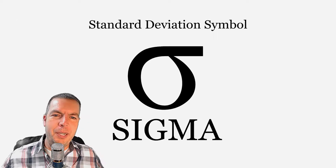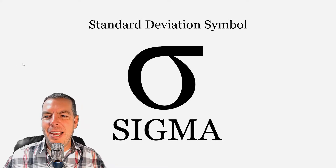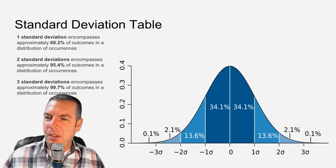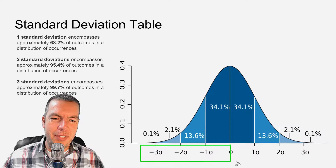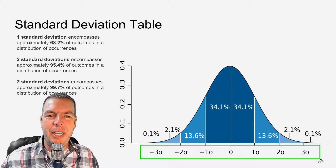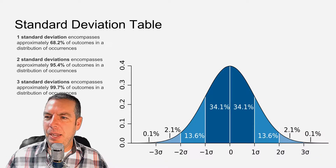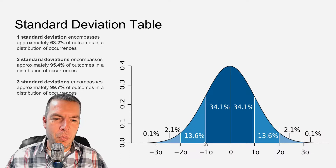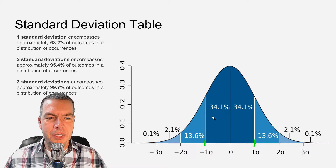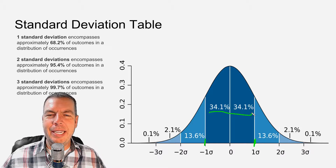So what is this symbol right here? This is the standard deviation symbol. I threw this slide in here so you'd feel smart looking at the next graph, because right along the bottom you can see our standard deviations. We have one, two, and three standard deviations represented on this standard deviation table. A one standard deviation — measured from one side to the other — is going to collect 68.2% of all data inputs.